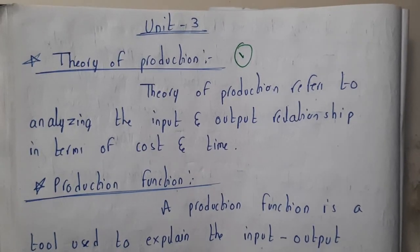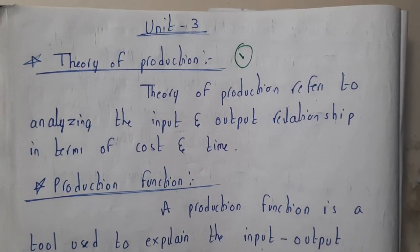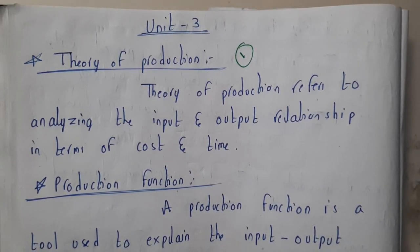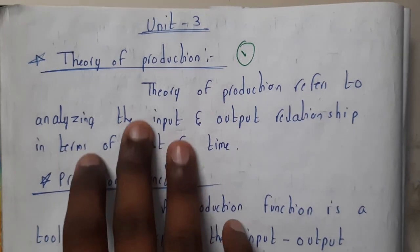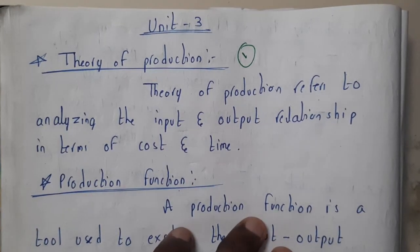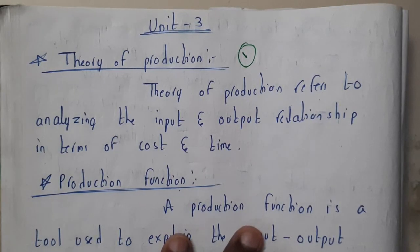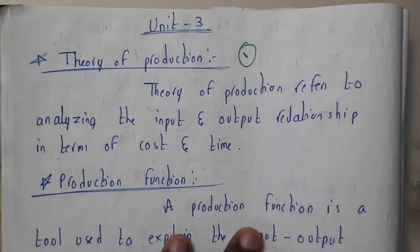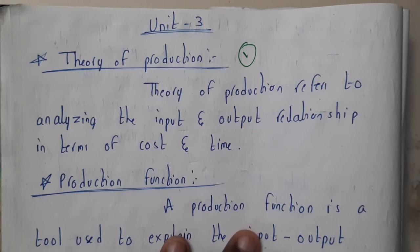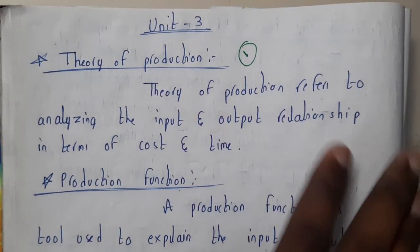Hello guys, we are back with our next lecture. In this series, we are going to start the third unit. This chapter consists of production — how you will be producing, about markets, how items will be sold, and all the things belonging to your business will also be covered here.